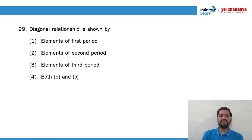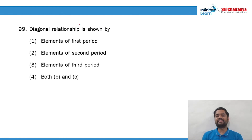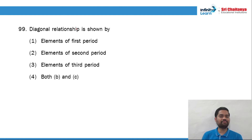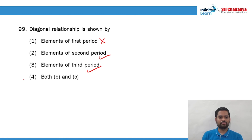Question 99: the diagonal relationship is shown between second period and third period elements. Elements of the second period — yes. Elements of the third period — yes. Elements of the first period — no. So option 4 is the right answer.